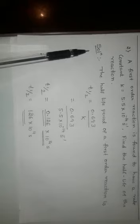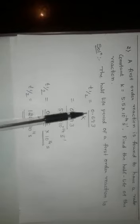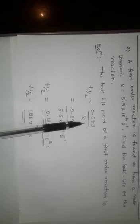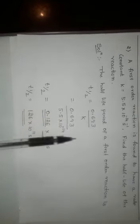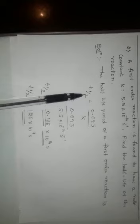Dear students, for a first-order reaction, half-life is equal to 0.693 divided by k. Here, k value is given as 5.5 into 10 to the power of minus 14 per second. Substitute the values in this equation.